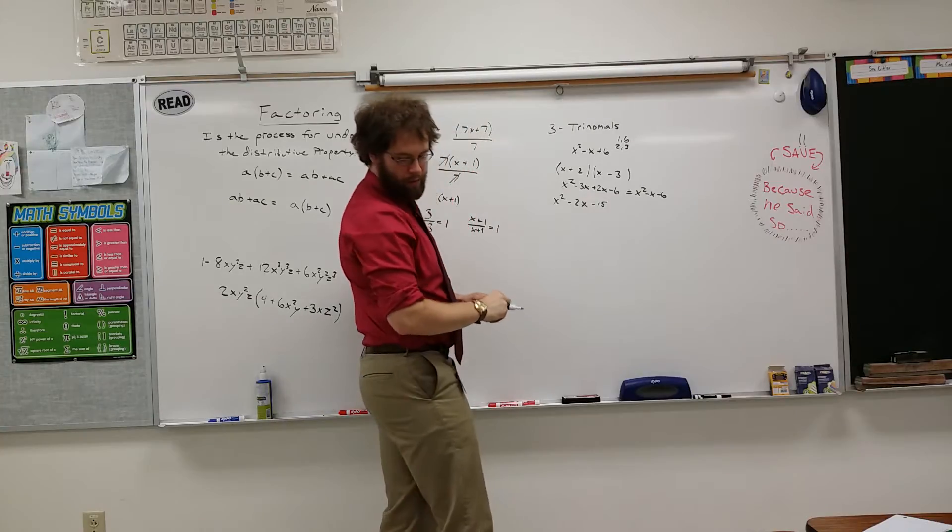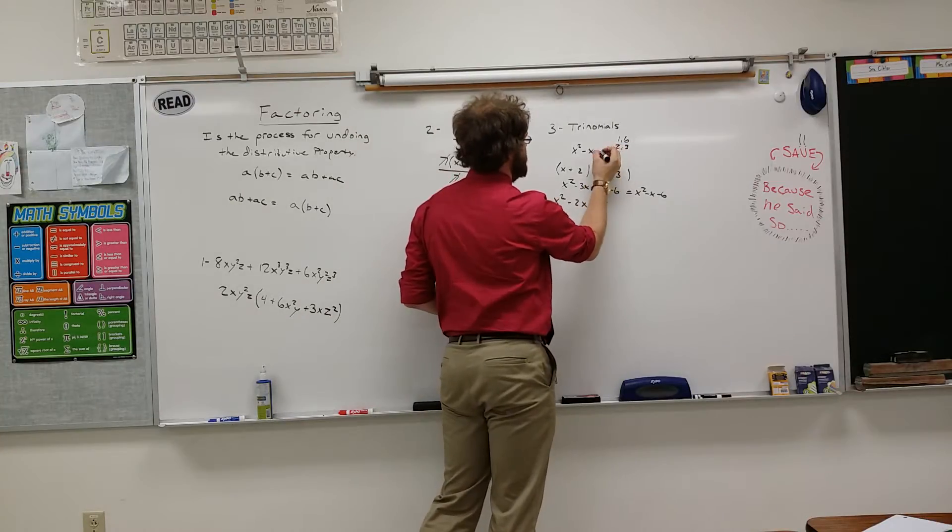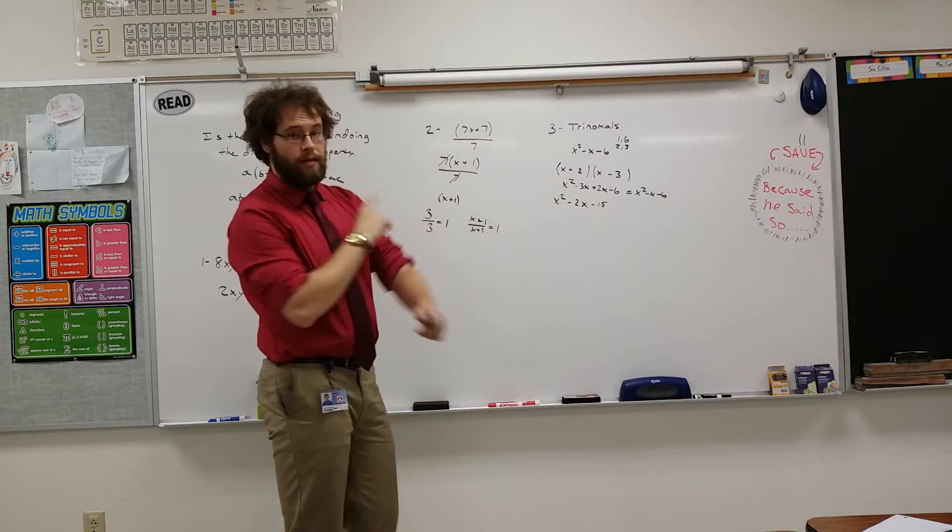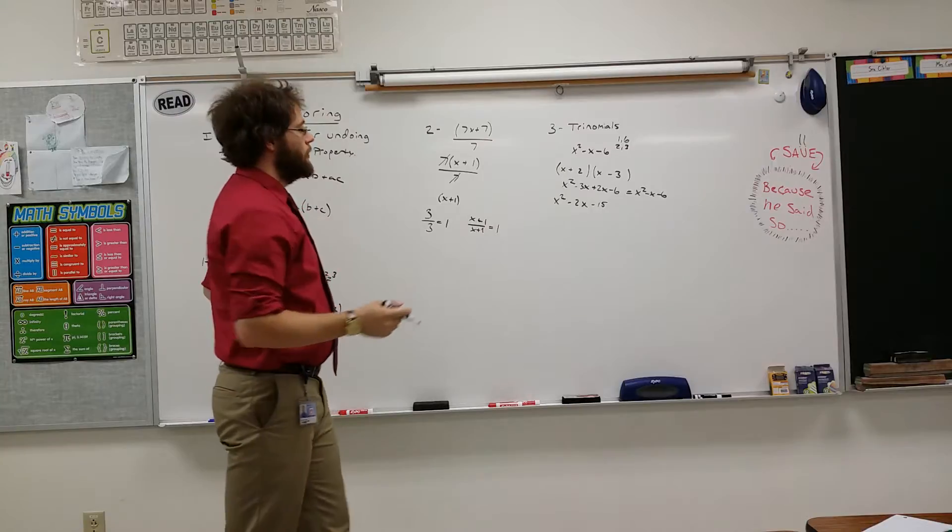That's X squared minus X minus 6. Oh, I wrote a problem down wrong. That's embarrassing. So, that's supposed to be a minus sign. And you'll end up getting minus 6. This is why you write out scripts, folks.